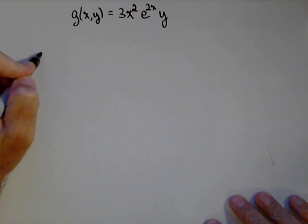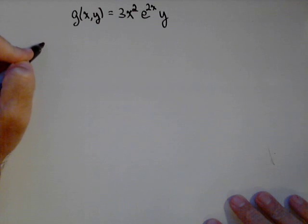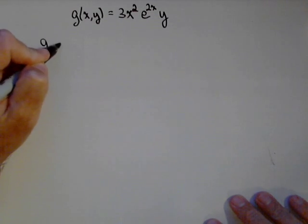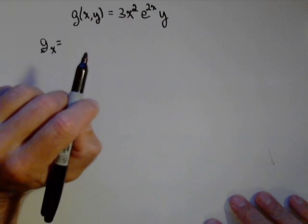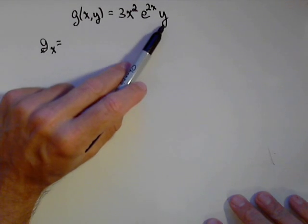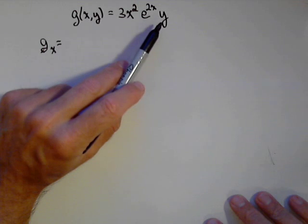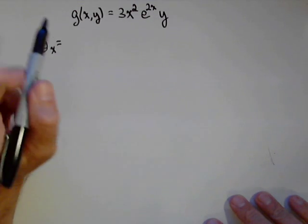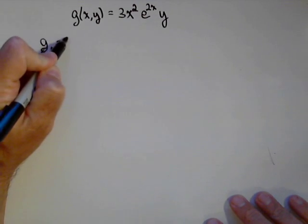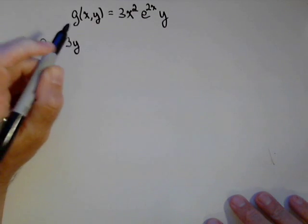As mentioned in previous videos, the biggest thing is when you're taking the partial with respect to some variable, so if we want to take the derivative of g with respect to x, we need to think of y as a constant. So this becomes a constant. We treat it like a constant. 3 is a constant, y is a constant. So 3y will be in our derivative, we'll treat it like a constant.